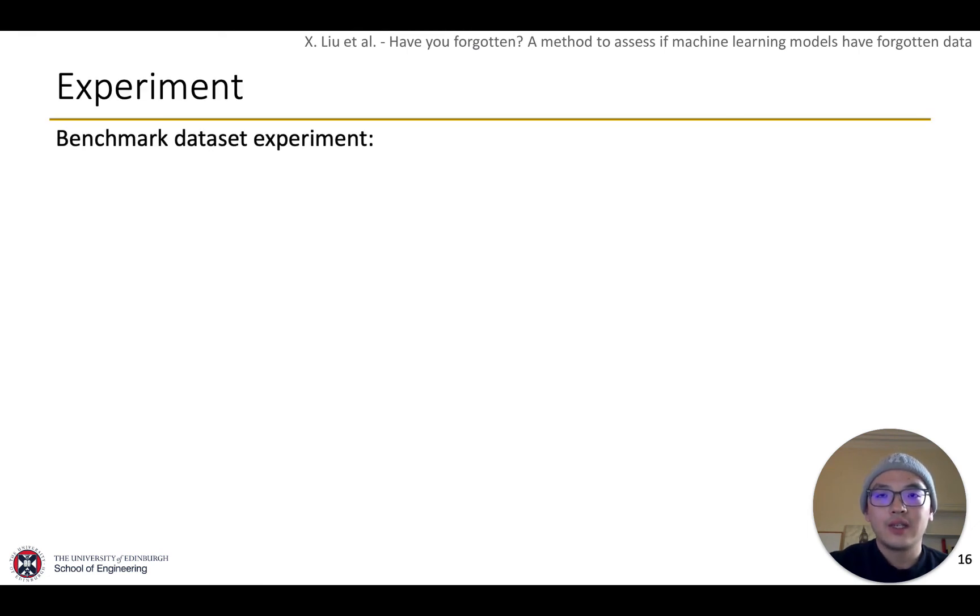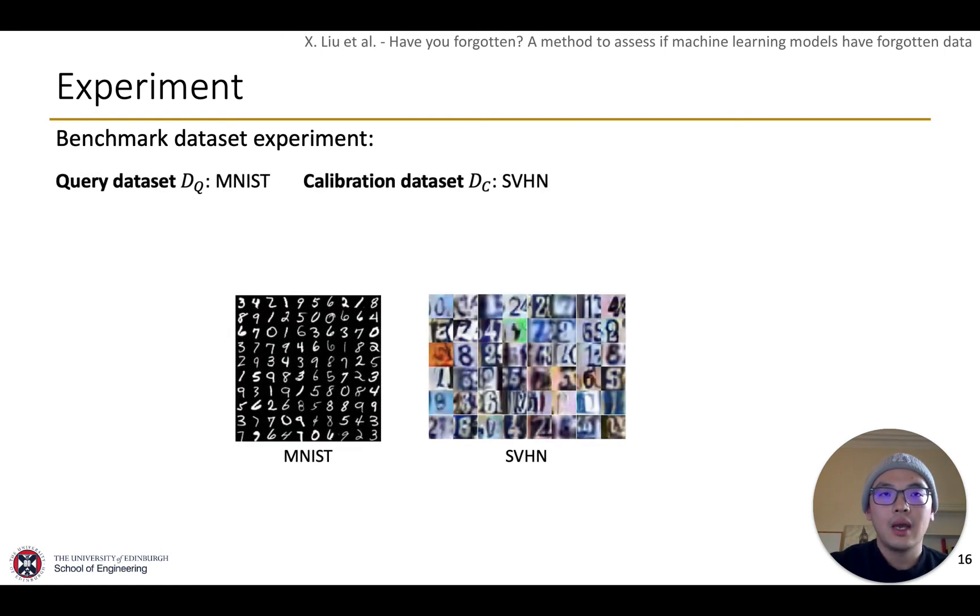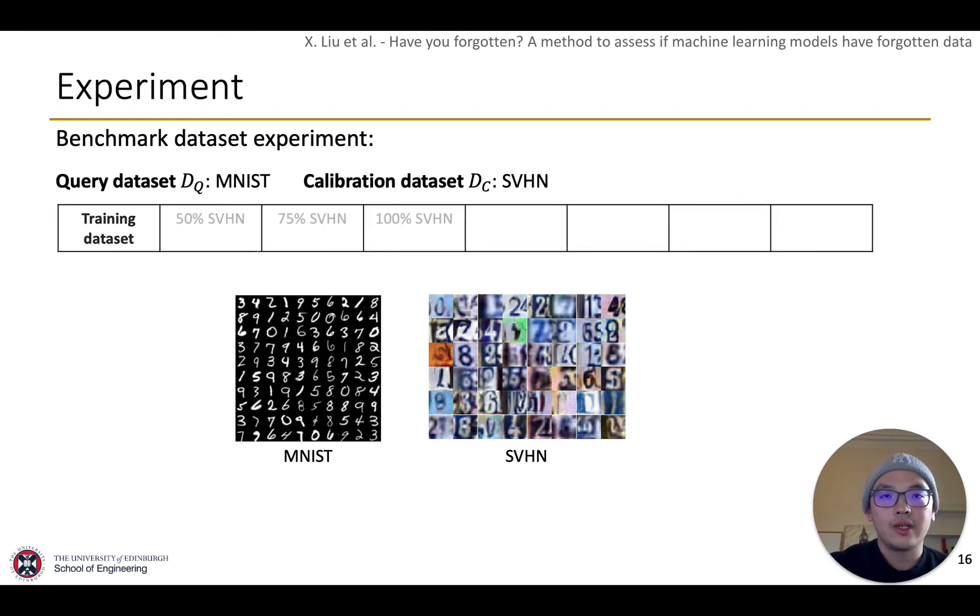For the benchmark dataset, we use MNIST as the query data. And we assume SVHN is the calibration dataset. We consider different D star datasets. The three cases does not contain query dataset. And four cases contain query dataset.